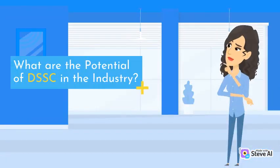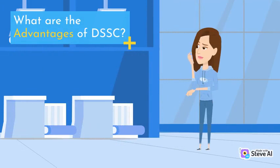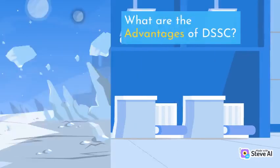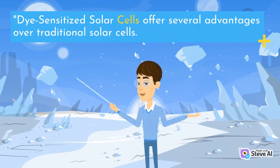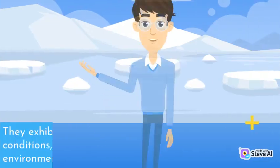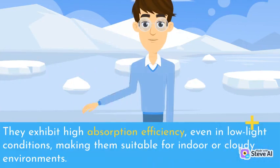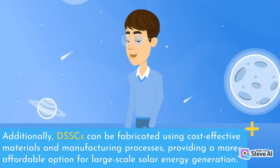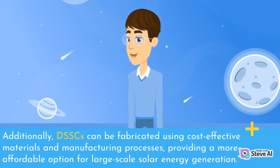What are the potential of DSSC in the industry? What are the advantages of DSSC? Dye-sensitized solar cells offer several advantages over traditional solar cells. They exhibit high absorption efficiency, even in low-light conditions, making them suitable for indoor or cloudy environments. Additionally, DSSCs can be fabricated using cost-effective materials and manufacturing processes, providing a more affordable option for large-scale solar energy generation.